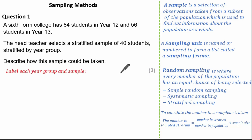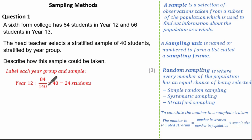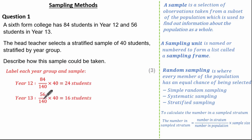First, label each year group and then sample. For Year 12: 84 out of a total of 140, multiplied by the sample size of 40, gives 24 students to be sampled from Year 12. For Year 13: 56 out of 140, multiplied by 40, gives 16 students to be sampled from Year 13.